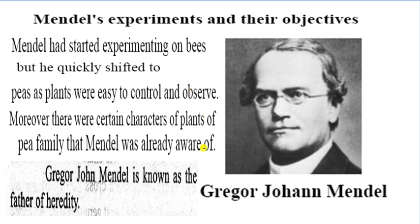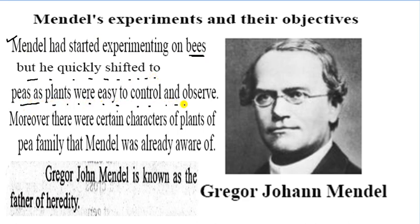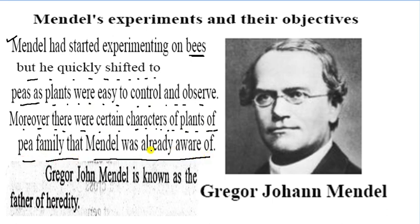A very famous person — Gregor John Mendel — experimented on the study of generations. Mendel's experiment and their objective: Mendel had started experiments on bees but quickly shifted to peas, as plants were easy to control and observe. Moreover, there were certain characters of the pea plant family that Mendel was already aware of. Gregor John Mendel is known as the father of heredity.